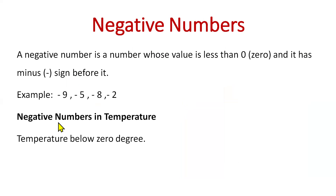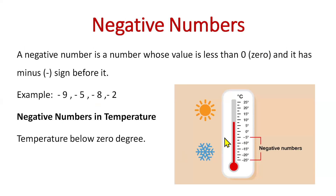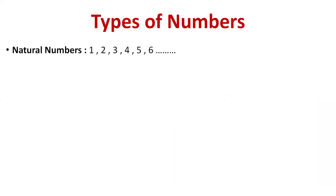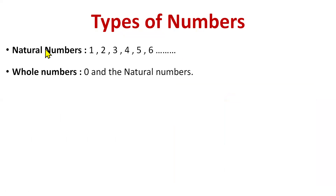Negative numbers in temperature are below zero degrees — it's the freezing cold temperature, for example minus 3. Now, types of numbers: natural numbers start from one and go till infinity — 1, 2, 3, 4, 5, 6, and so on. Whole numbers are when we add zero to the natural numbers, giving us 0, 1, 2, 3, 4, 5, 6 till infinity.